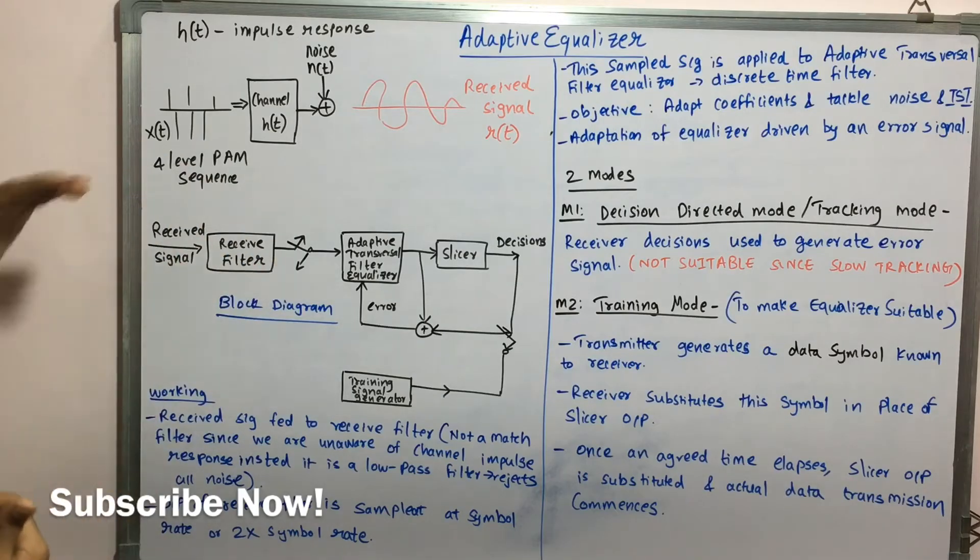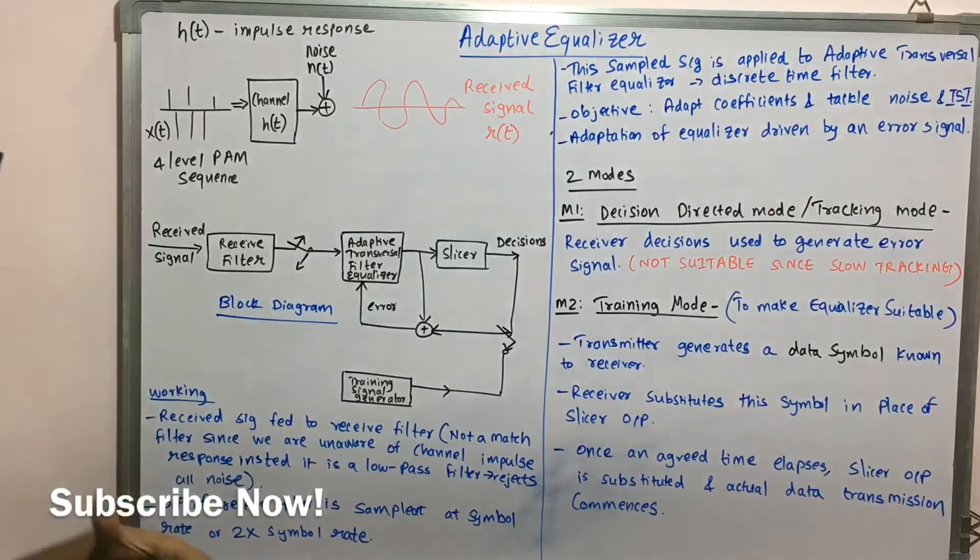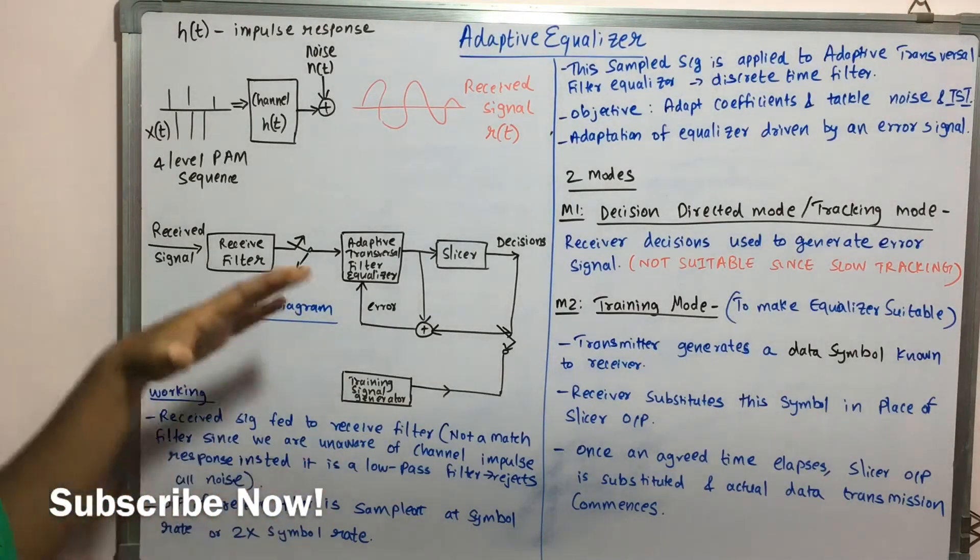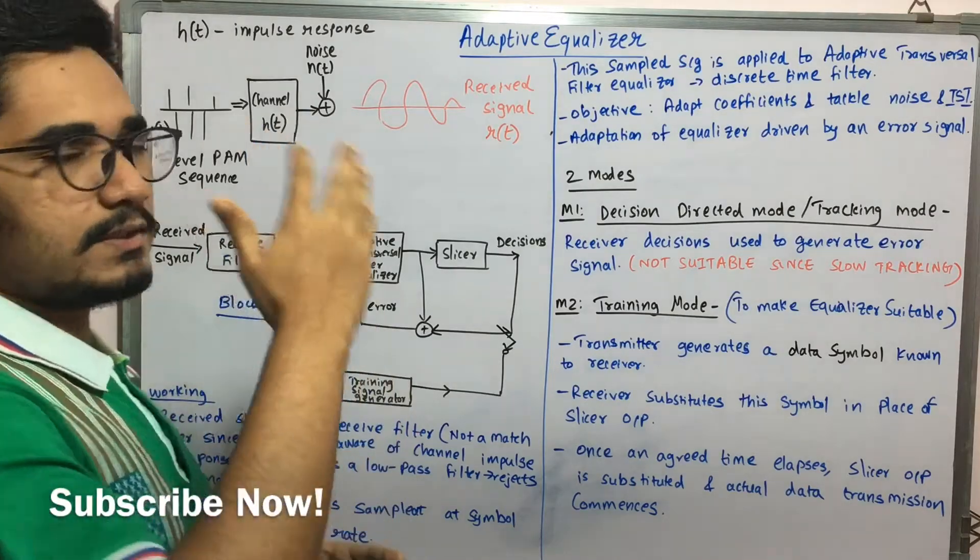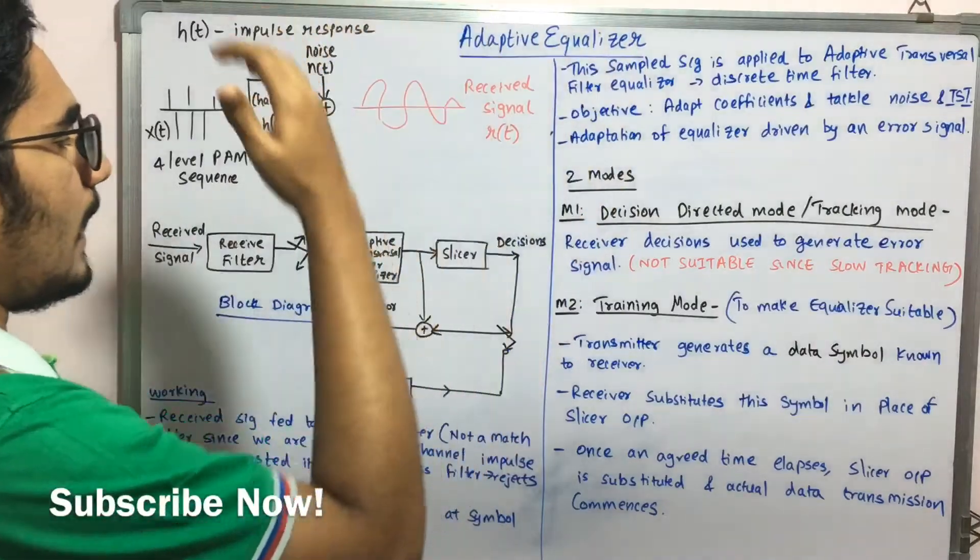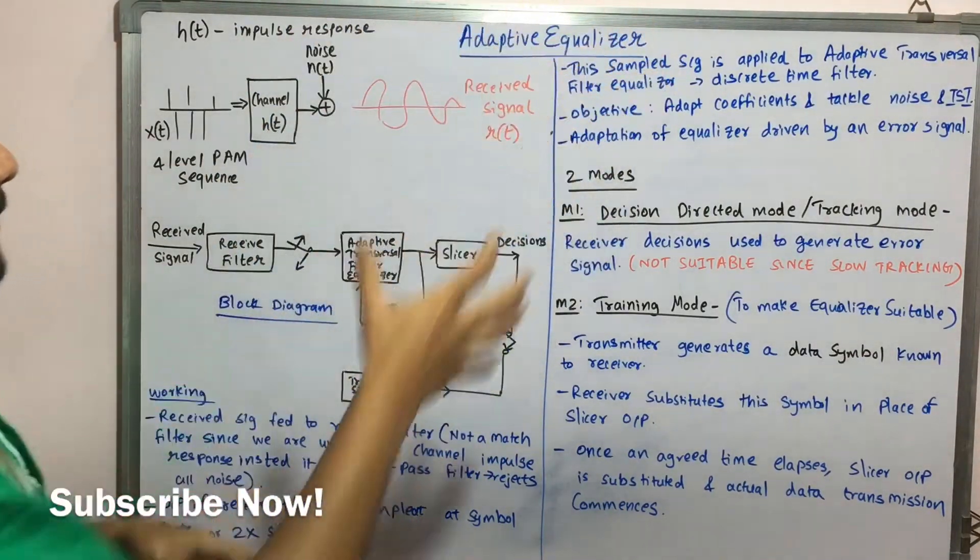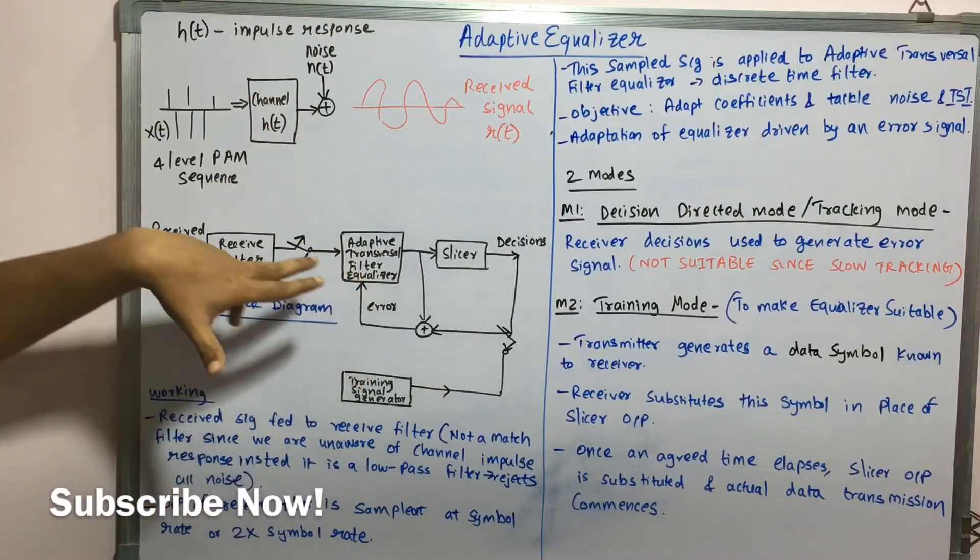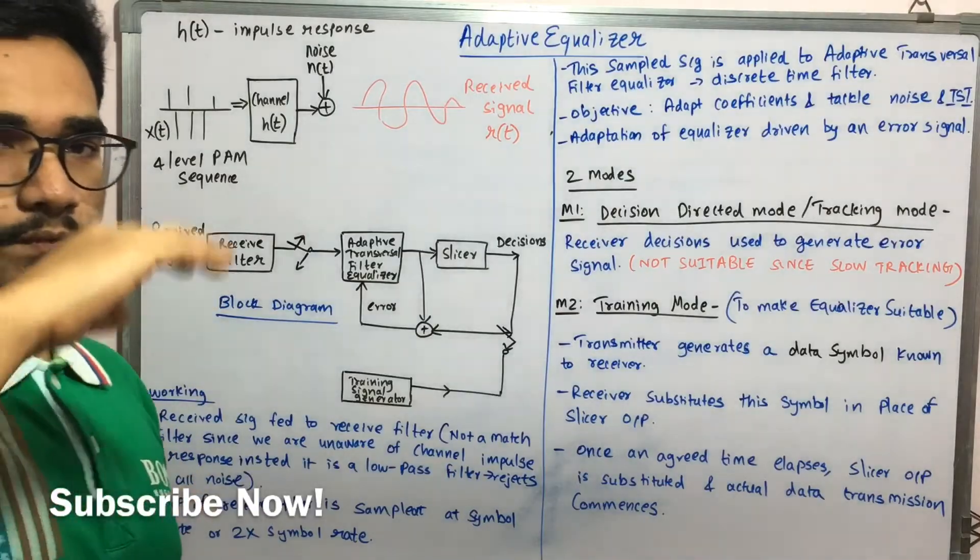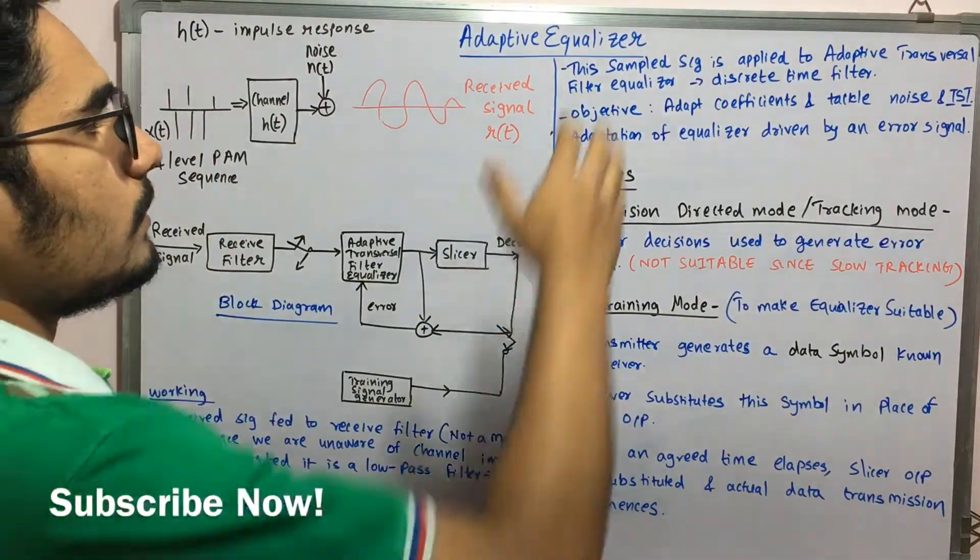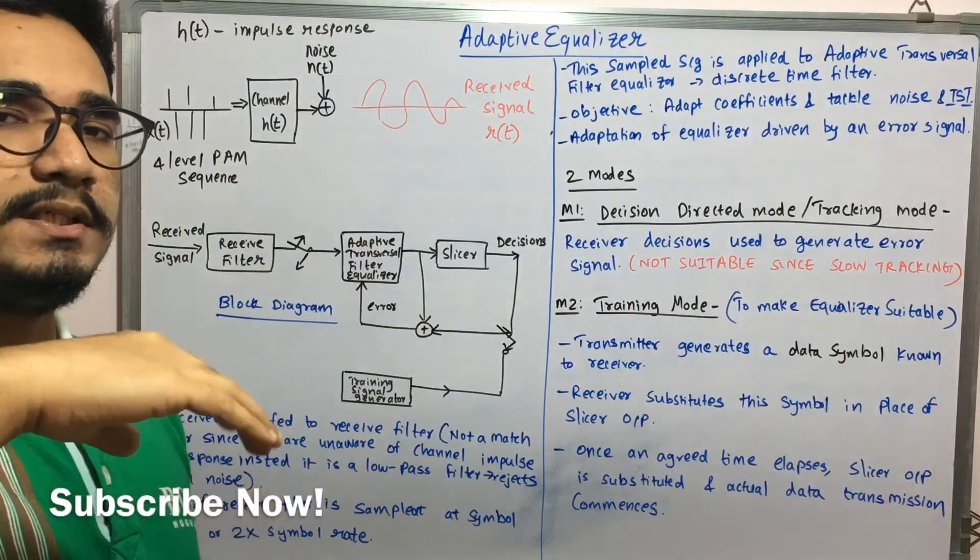Now output of this received filter is sampled at a symbol rate. So that symbol rate could be two times of the original symbol rate or it could be a normal symbol rate. Then the sampled signal which is in a discrete time manner is applied to an adaptive transversal filter equalizer. So this adaptive equalizer has its name as adaptive transversal filter equalizer means it transverses over a particular time. So it needs to be a discrete time filter. So accordingly with the time it filters all the signals.